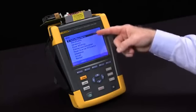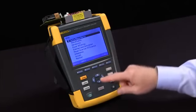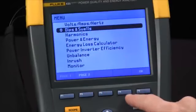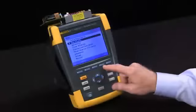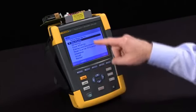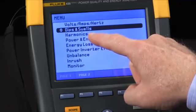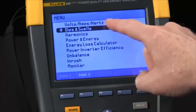The 435 trends for all these tests at a rate of five readings per second with the exception of dips and swells where we do 120 readings per second to give you half cycle resolution. We will see a lot more information recorded in a harmonics recording versus volts, amps, and hertz.